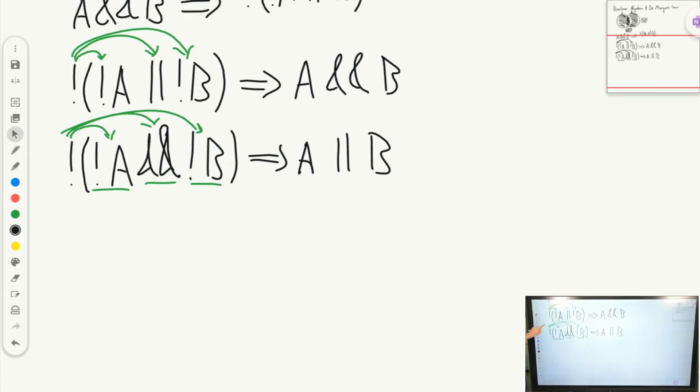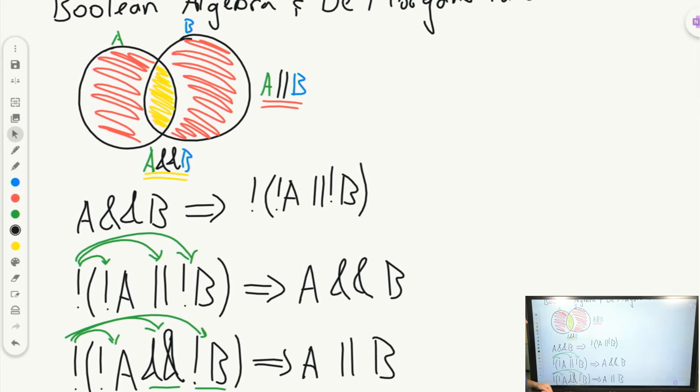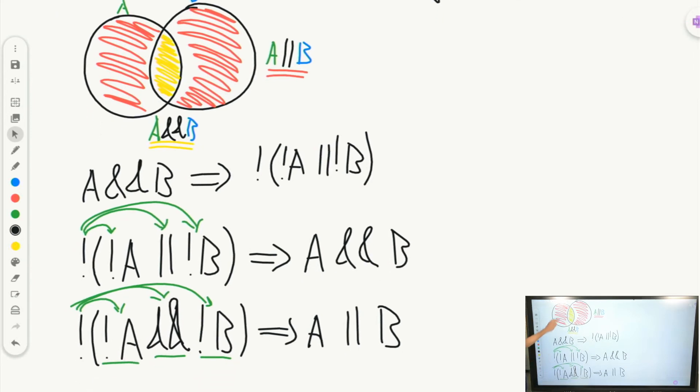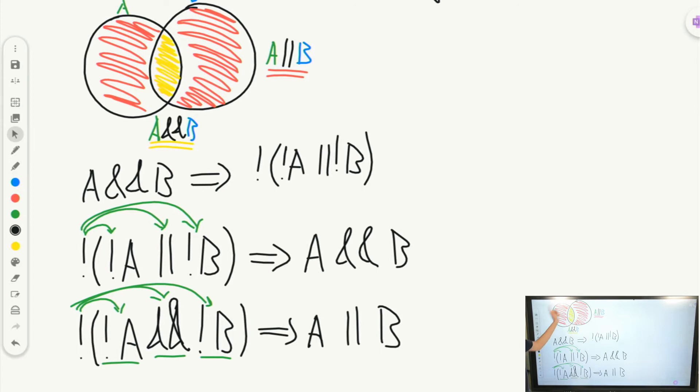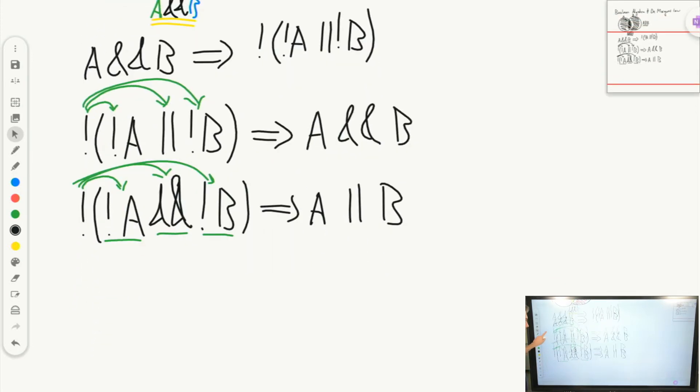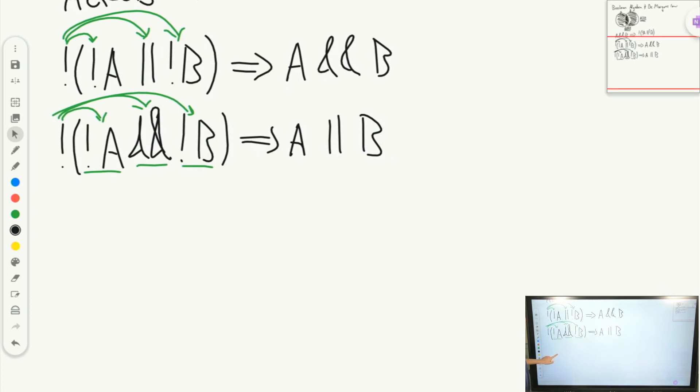When we look back at our Venn diagram, it sort of makes sense. Anything that is in the space that would be NOT A and NOT B and is NOT in either of those is going to be in here. It's going to be in our OR. So anything that's not in this space, not in this space, not in either of them, it's going to be in the middle.